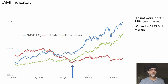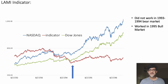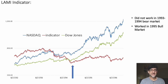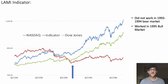Going forward, I'm going to quickly talk about some points in time when it was bullish and bearish. The first one is where it did not work — the 1993 to 1994 period. The Dow Jones is in green, the NASDAQ is always in blue, and the indicator is in red. You can see the indicator was weak in 1993; it started going down while the Dow Jones and NASDAQ were flat. So it was indicating the market would go down, but the market didn't. That's one case where it did not work.